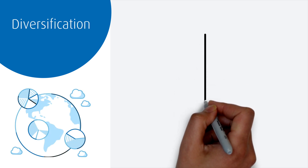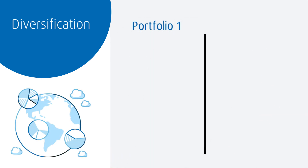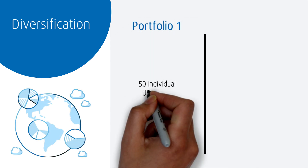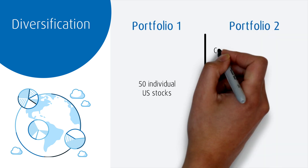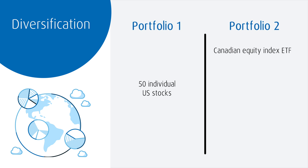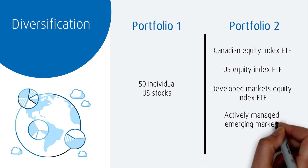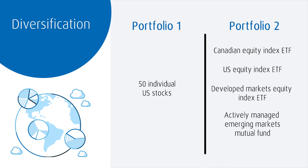Let's take a look at two sample portfolios. The portfolio on the left is made up of 50 different U.S. stocks. The portfolio on the right holds one Canadian equity index fund, a U.S. index fund, a developed markets index fund, and an actively managed emerging markets mutual fund. The portfolio on the left has some diversification, but the portfolio on the right is actually much more diversified — each index fund itself may hold hundreds of stocks.